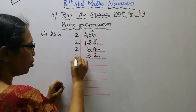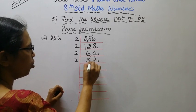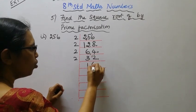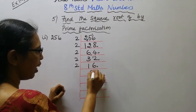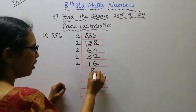Divide by 2, 2 into 4 is 2. Divide by 2 again, 2 into 2 is 1. We continue dividing by 2 until we reach 1.